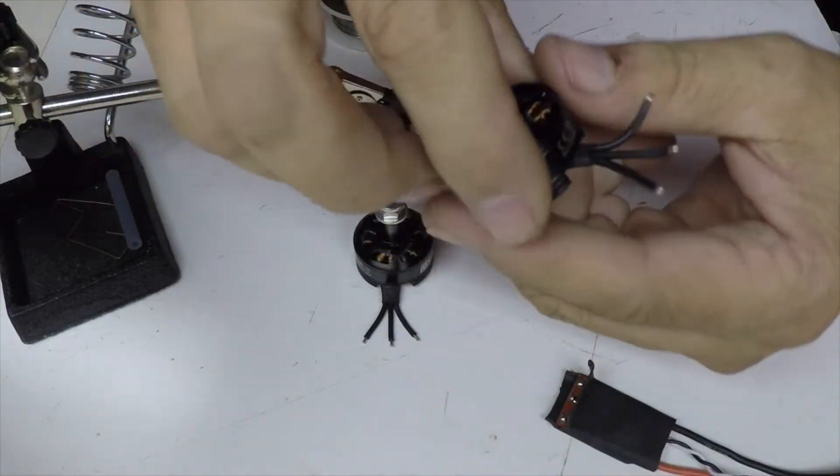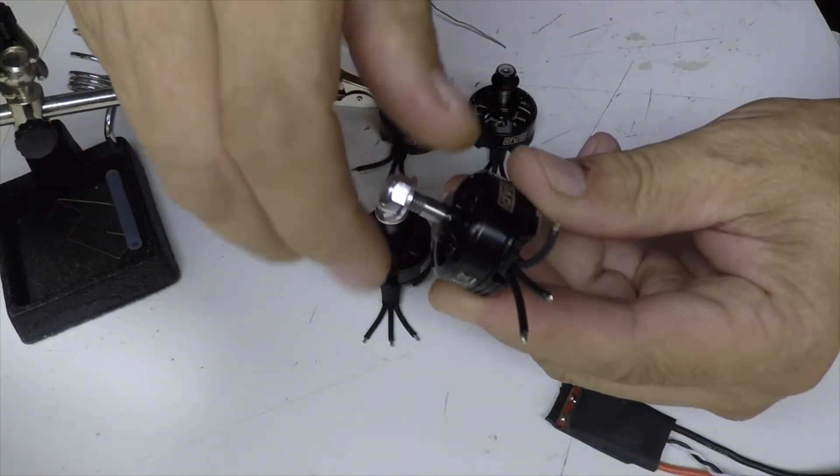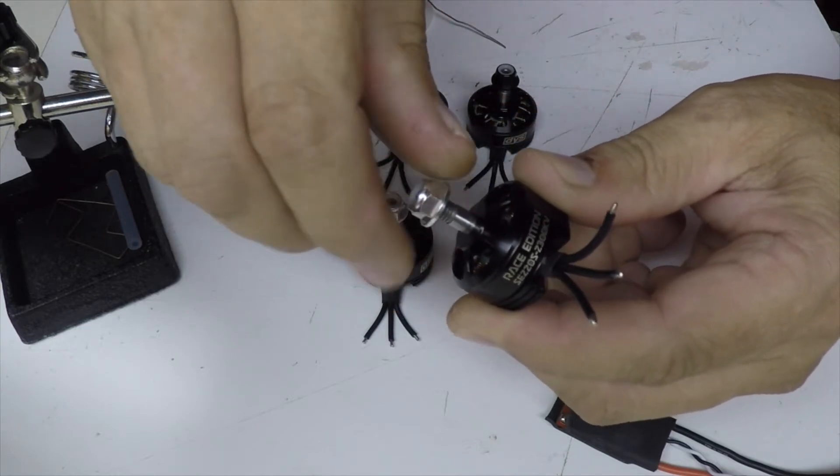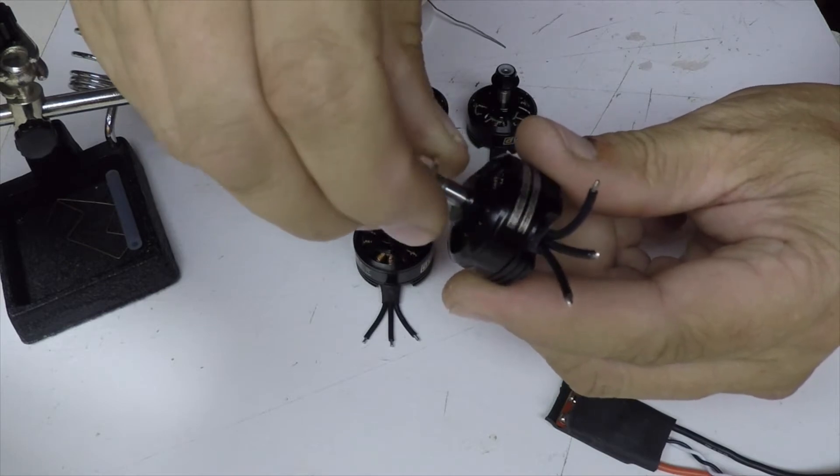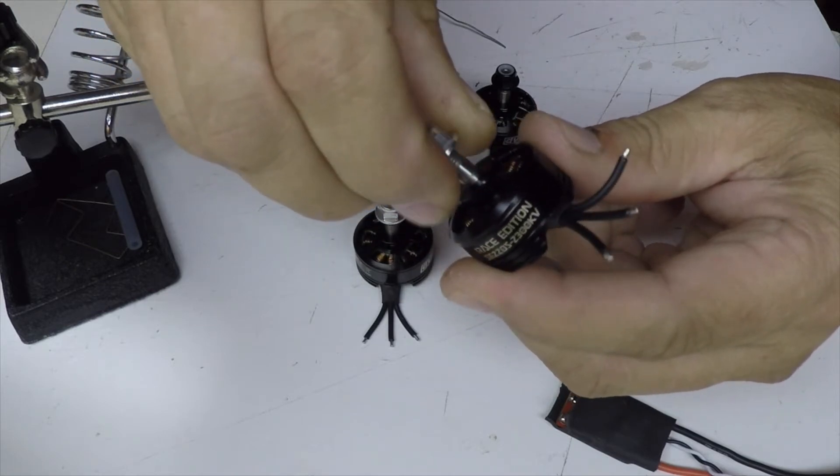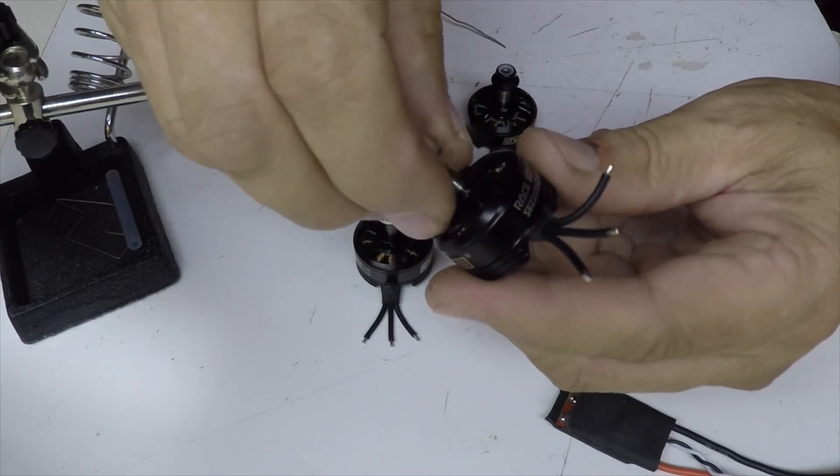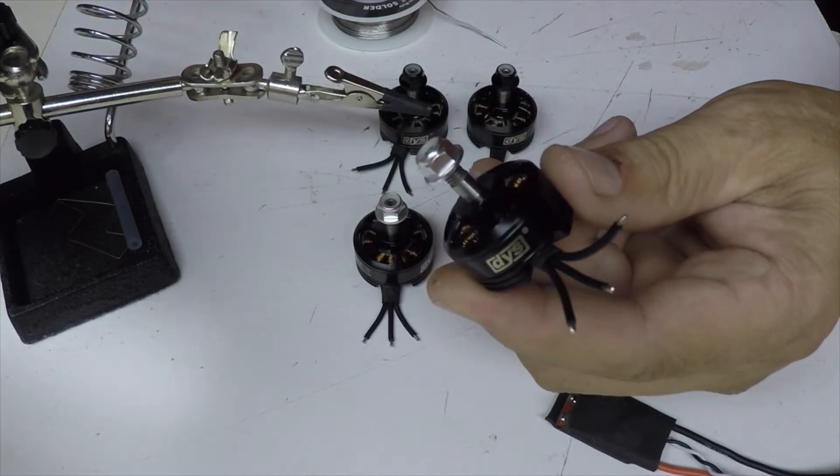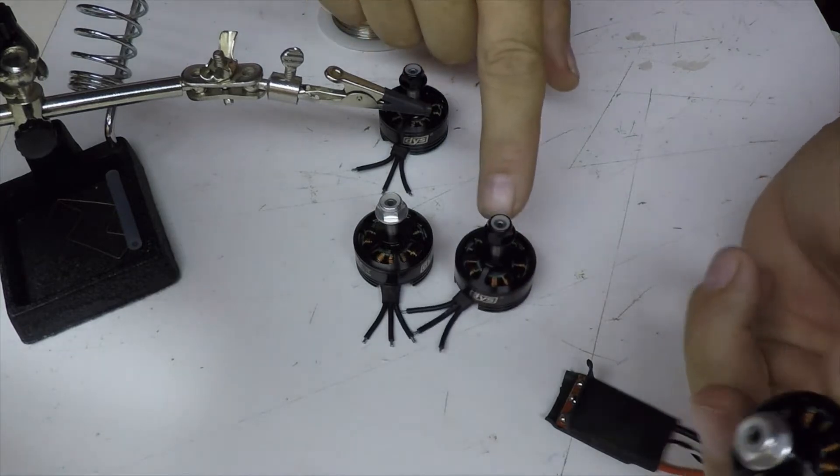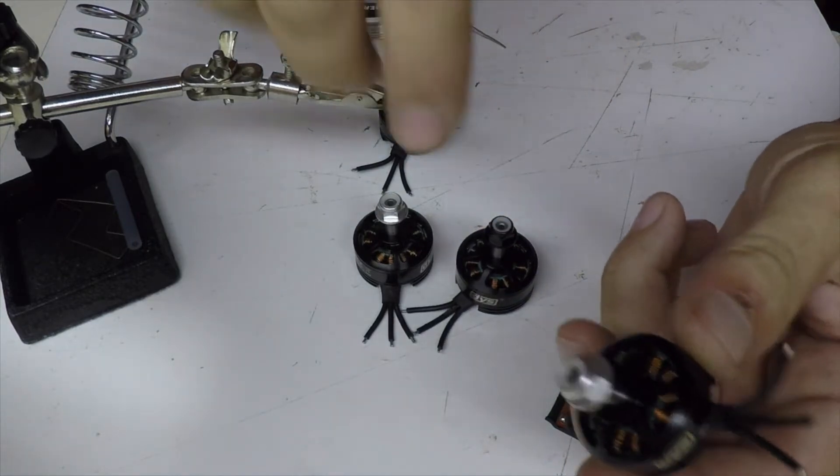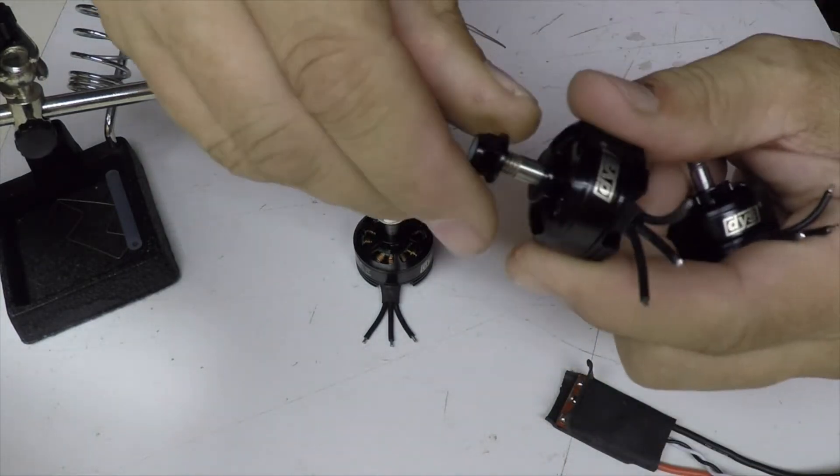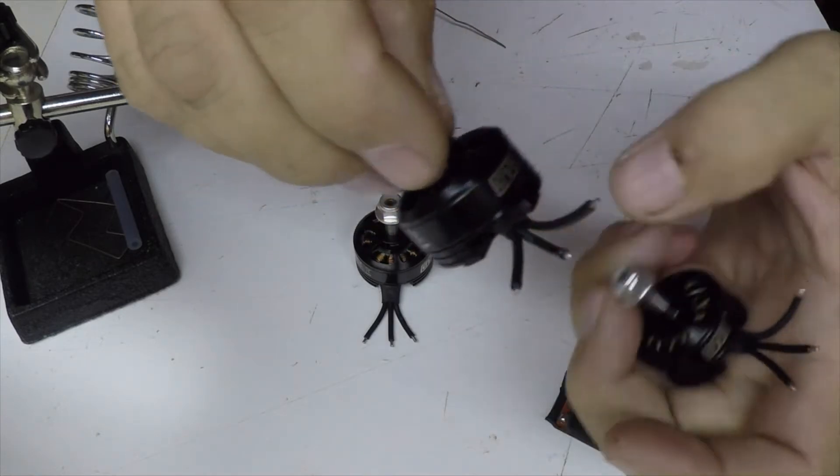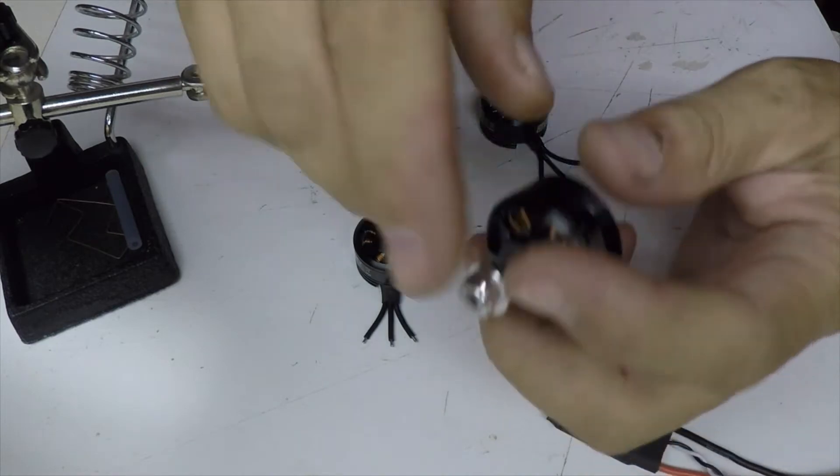Two clockwise and two counter-clockwise. The ones with the silver nut need to spin counter-clockwise, and the ones with the black prop nut need to spin clockwise. Let me just double check. Yes, that's right.